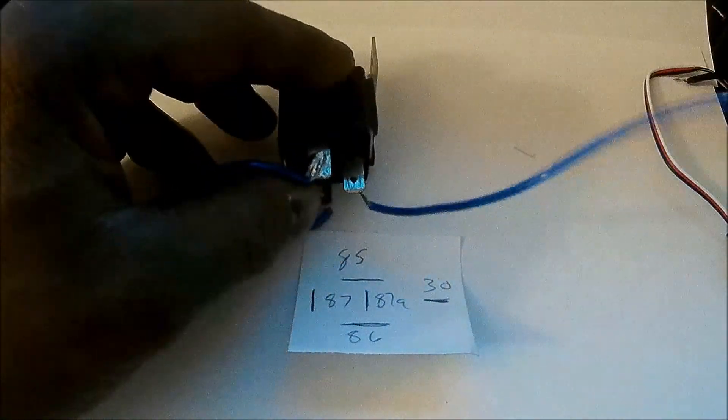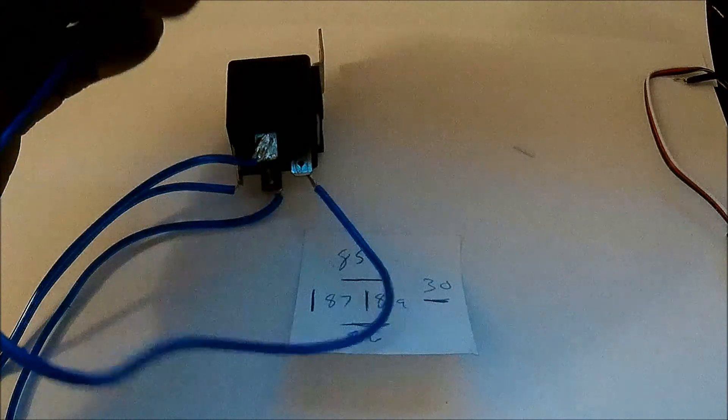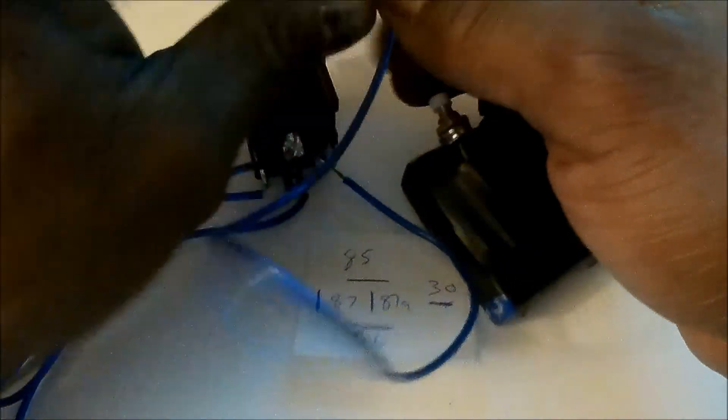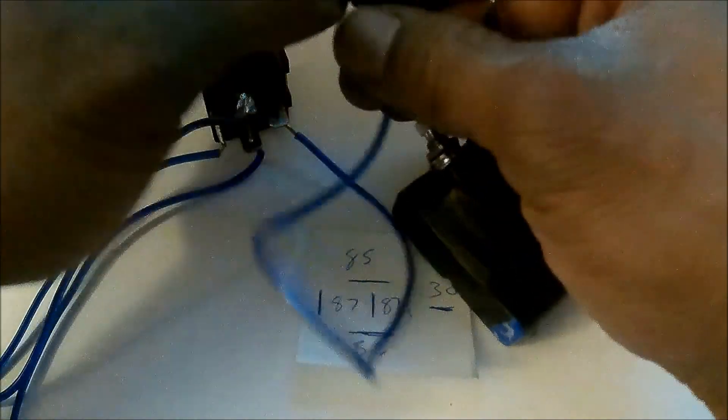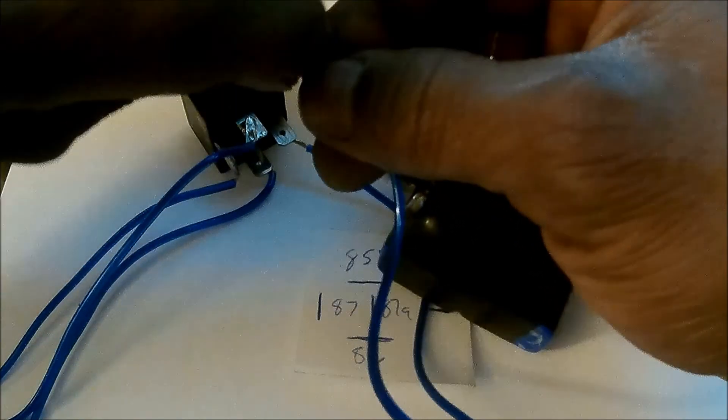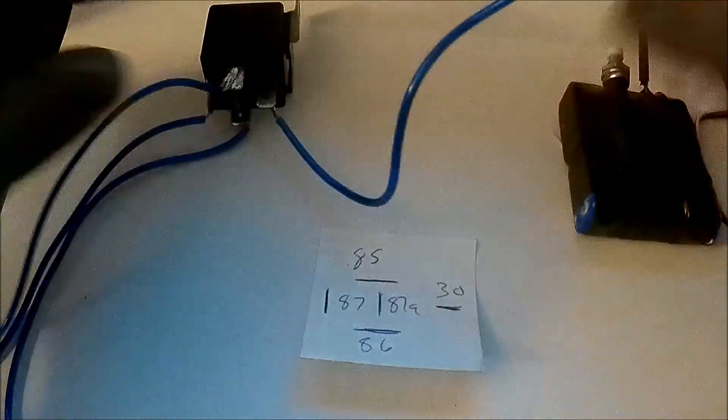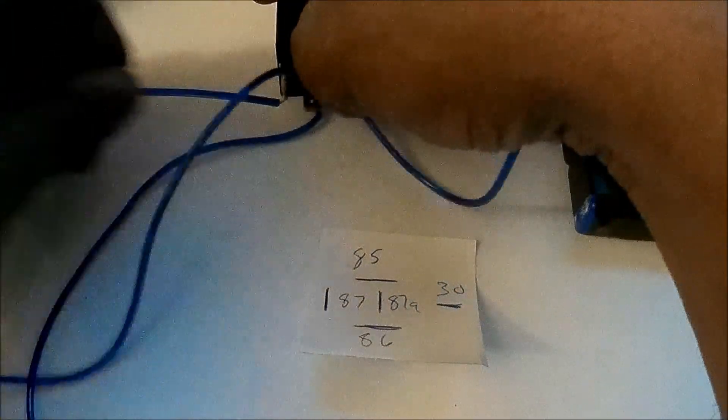So pin number 30, the one that's sideways right here, we're going to wire that up to a positive on the battery. Give it a couple twisties here, nothing permanent.